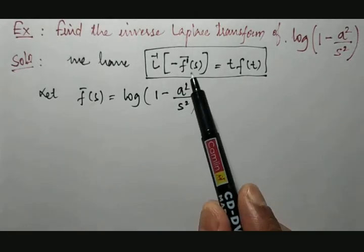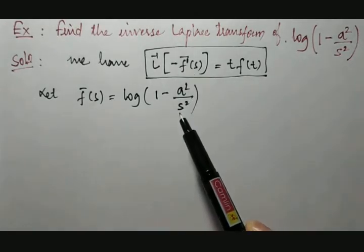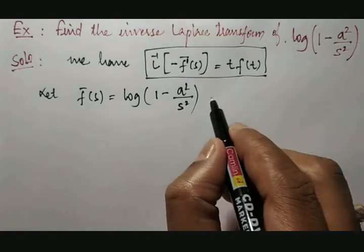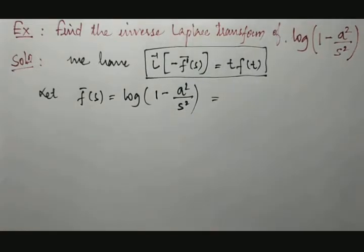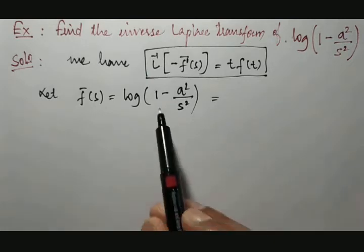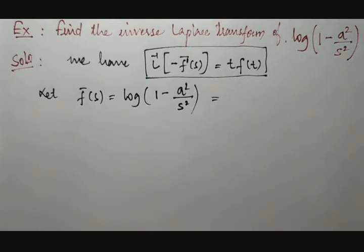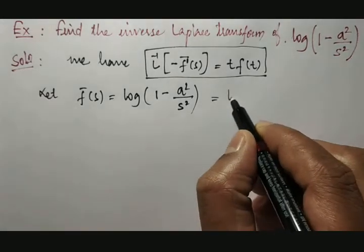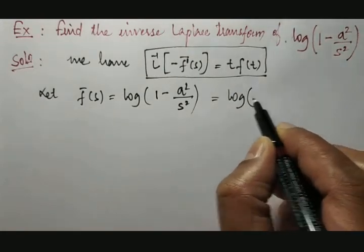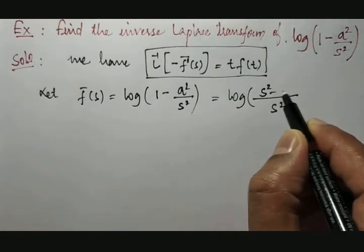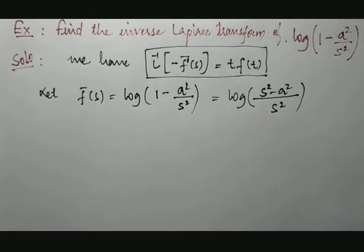Usually what we do after getting f-bar of s is try to apply the logarithm property, but right now it is not in that format. If you apply the logarithm property, it becomes something like log(a minus b). We know what log(a times b) is, but we don't know what log(a plus b) or log(a minus b) is. Therefore, we will take LCM, which gives us log of s-squared minus a-squared over s-squared.